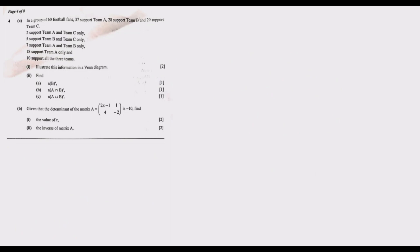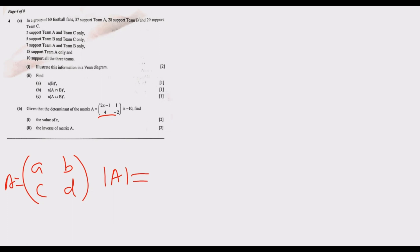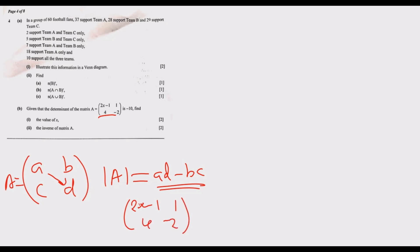Now moving to Question 4(b): given that the determinant of matrix A equals negative 10, find the value of x. For a general 2×2 matrix A with entries a, b, c, d, the determinant is ad minus bc. Our matrix has entries 2x, negative 1 in the first row, and 1, negative 2 in the second row, with the determinant set equal to negative 10.